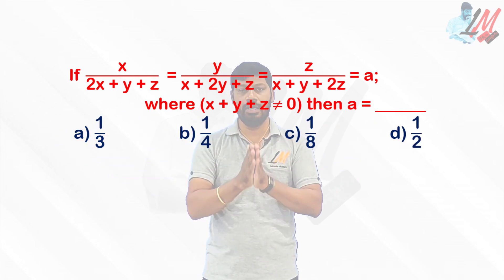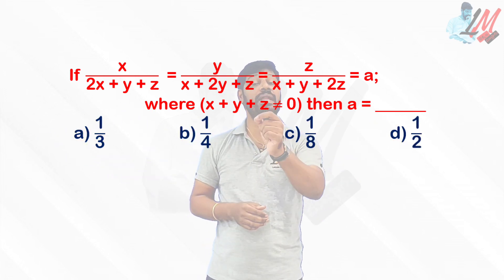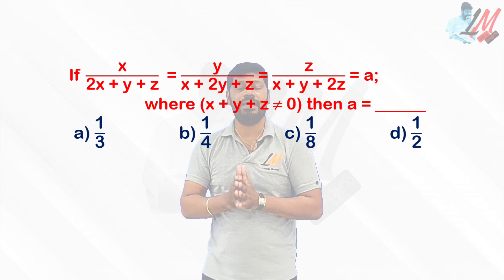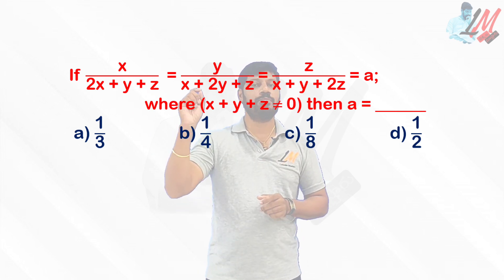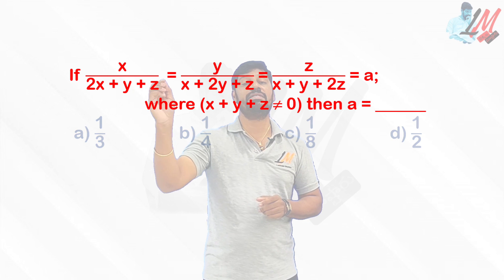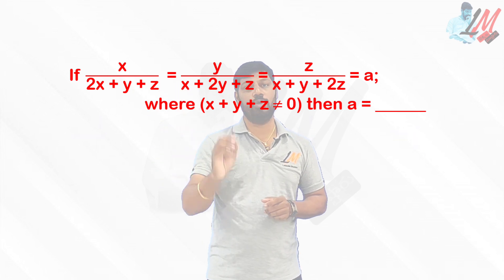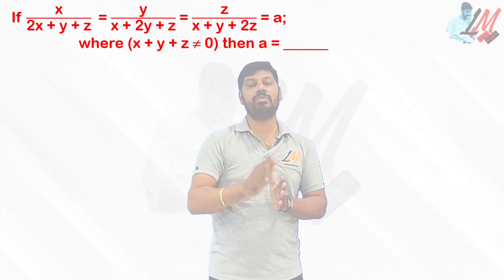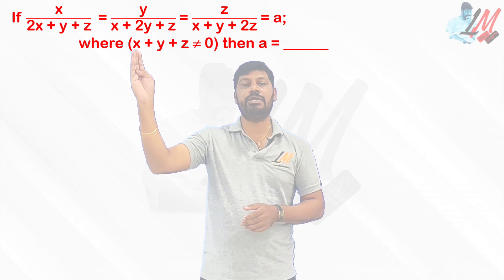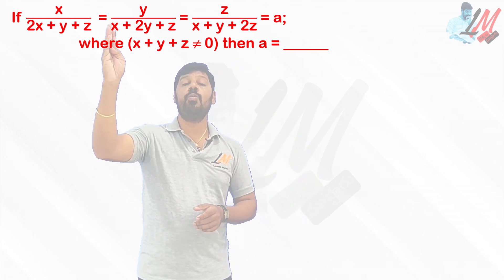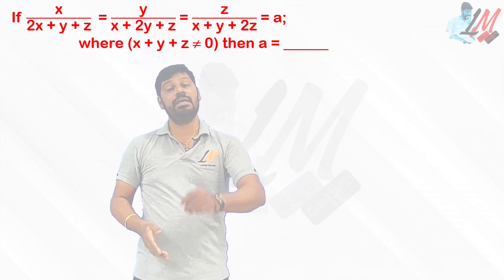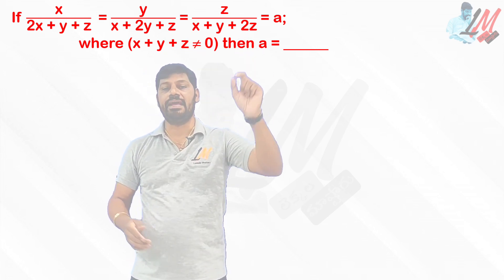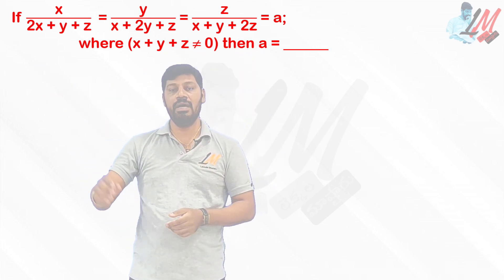Four numerical values were given, and you are supposed to find the numerical value of a using all three relations, keeping in mind that x + y + z ≠ 0. The four quantities given are: x/(2x+y+z), y/(x+2y+z), z/(x+y+2z), and a.